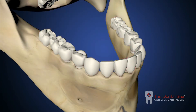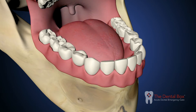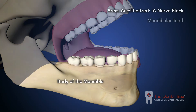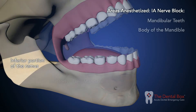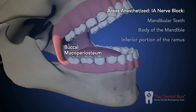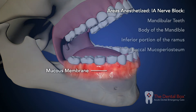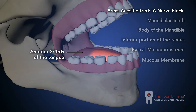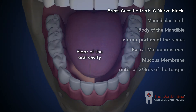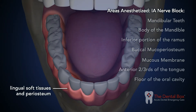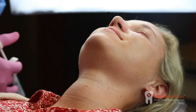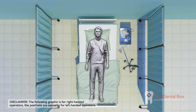The inferior alveolar nerve block provides anesthesia to the mandibular teeth to the midline, body of the mandible, inferior portion of the ramus, buccal mucoperiosteum, mucous membrane anterior to the mental foramen, anterior two-thirds of the tongue, floor of the oral cavity, lingual soft tissues, and periosteum.